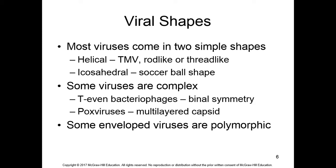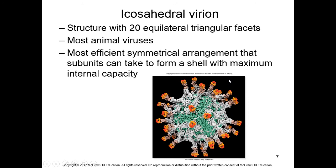Most viruses come in two simple shapes: helical and icosahedral. Some viruses are complex — for example, bacteriophages like T-phages and lambda phages. Poxviruses are considered complex symmetry because they have multilayered capsids, and some enveloped viruses are also polymorphic, meaning they may show multiple morphologies.